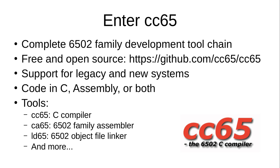So we need something better — we need something like a compiler. Enter CC65. It is a complete 6502 tool chain for not just the 6502 but the whole family of processors based on that same architecture. It's free and open source — go right to GitHub, clone it, fork it, build it yourself. It works on a lot of different platforms including Windows, Linux, even a Raspberry Pi. And it has support for all these legacy systems going back to the Apple II through the '70s, '80s, and even into the '90s with the Super Nintendo based on the 65816 — and including new systems like the Commander X16, with support built right in.